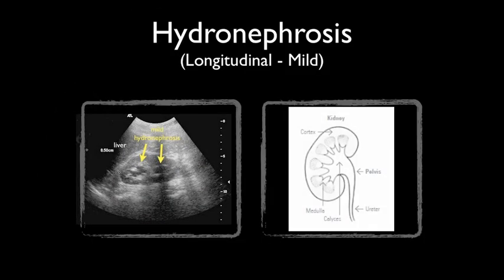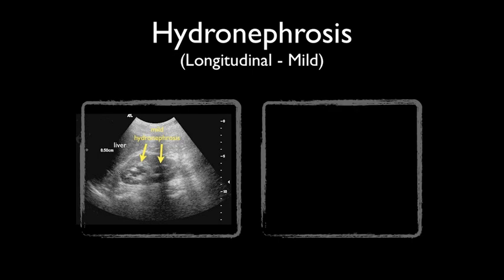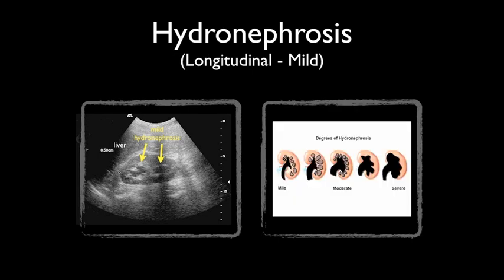Hydronephrosis is the distension and dilation of the renal pelvis and calyces, usually caused by obstruction. If untreated, it can lead to progressive atrophy of the kidney. These are the different degrees of hydronephrosis, ranging from mild to severe.